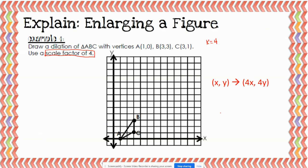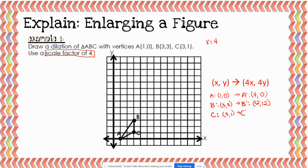A was originally at (1, 0), so A prime is going to be at 4 times 1, which is 4, and 4 times 0, which is 0. B was originally at (3, 3), so B prime is going to be at 4 times 3, which is 12, and 4 times 3 again, which is also 12. C was located at (3, 1), so C prime is going to be at 4 times 3, which is 12, and 4 times 1, which is 4.